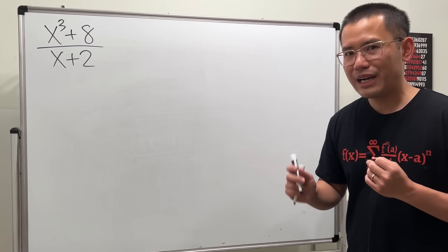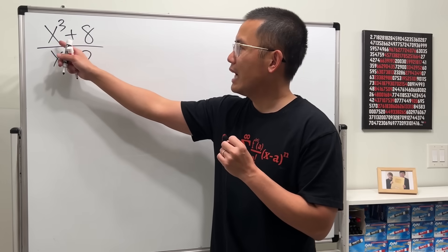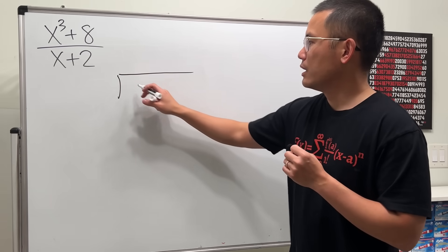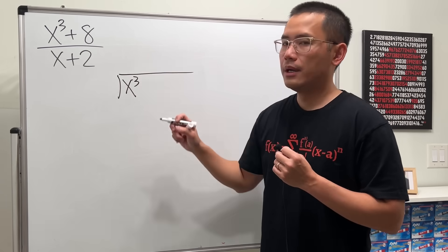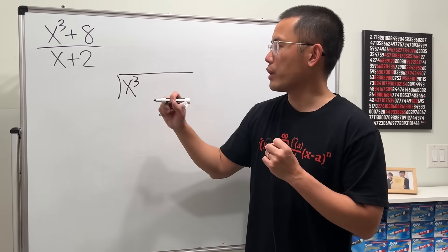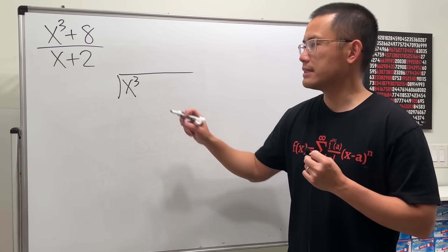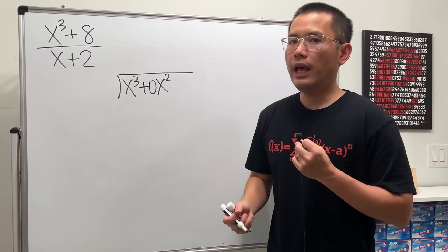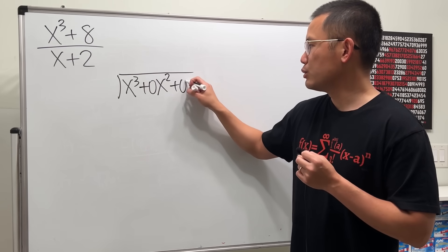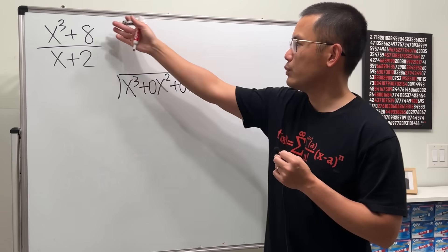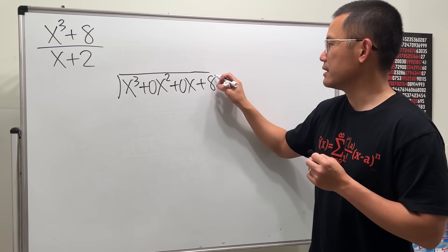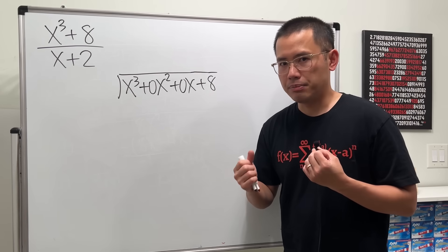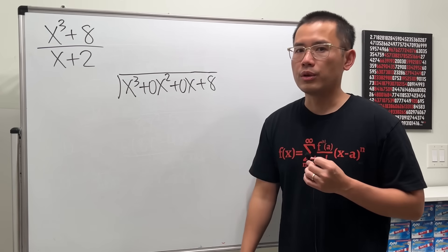For the third example, we have x³ + 8, and we need to be careful. When setting it up on the inside, write x³, but since there is no x² term, you must put down plus 0x². And since there is no x term, put down plus 0x. Then lastly the plus 8. You must have those 0 placeholders to help with long division.